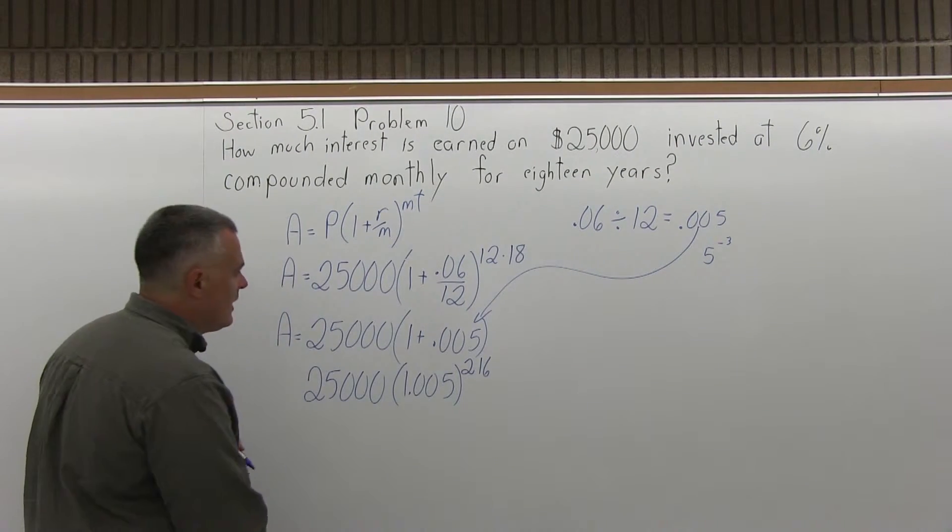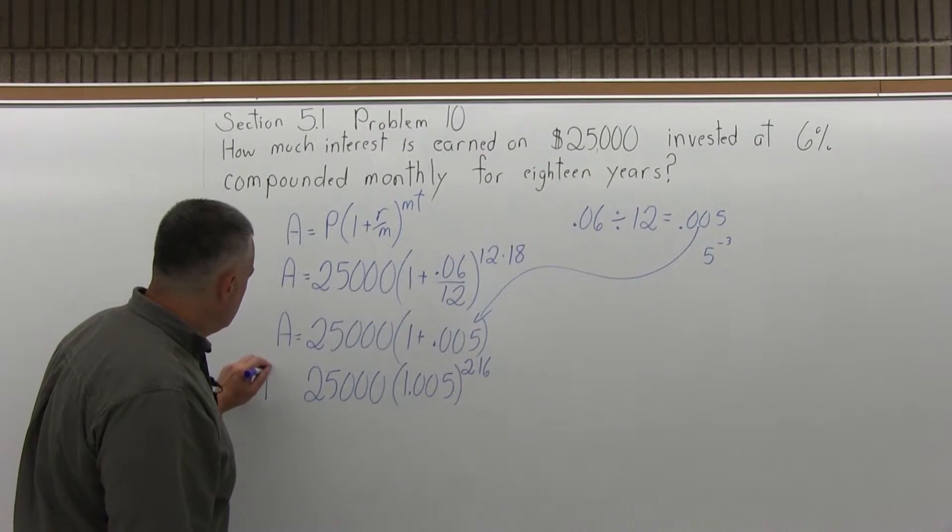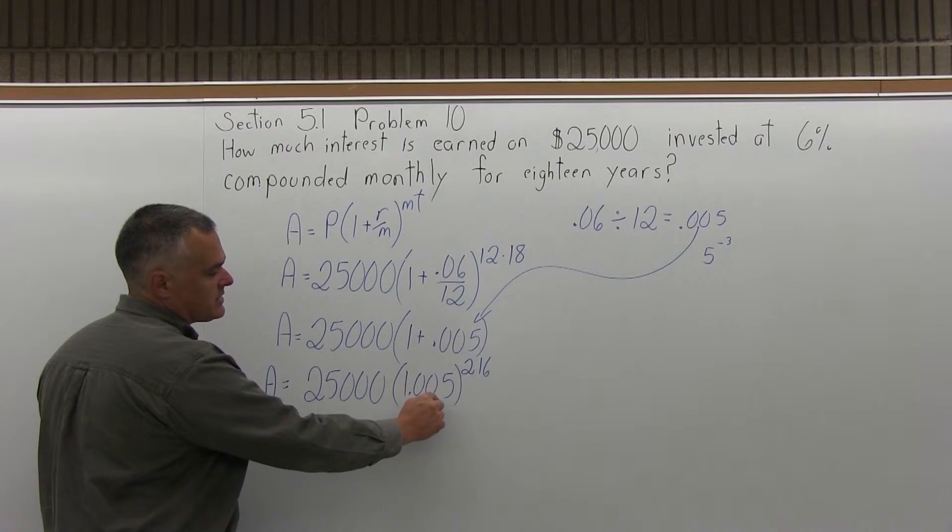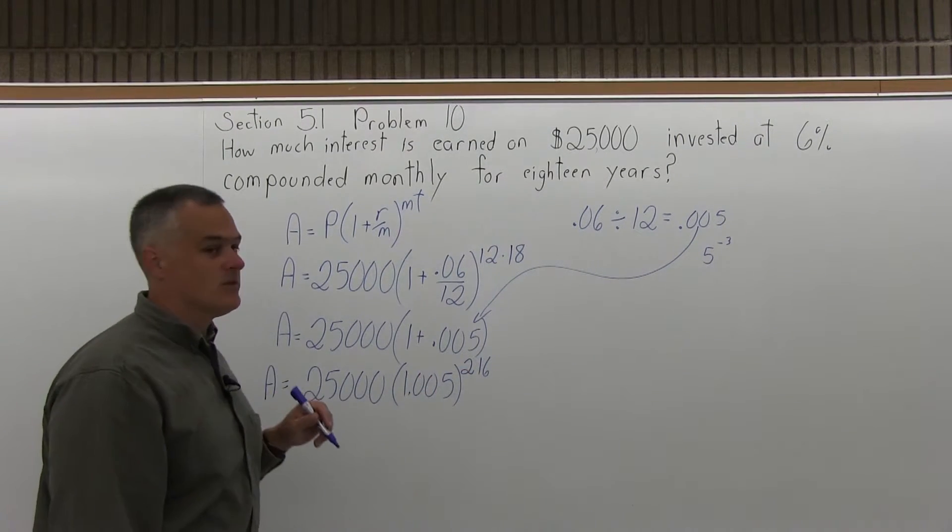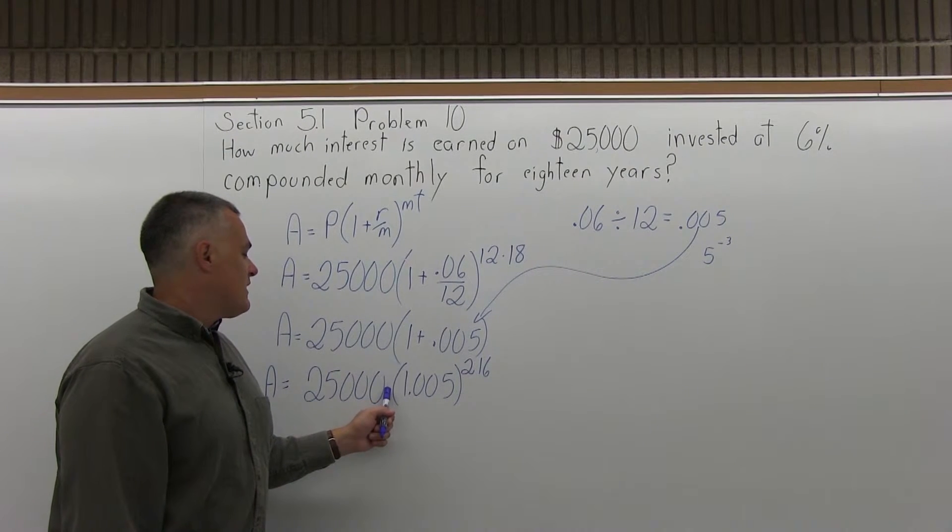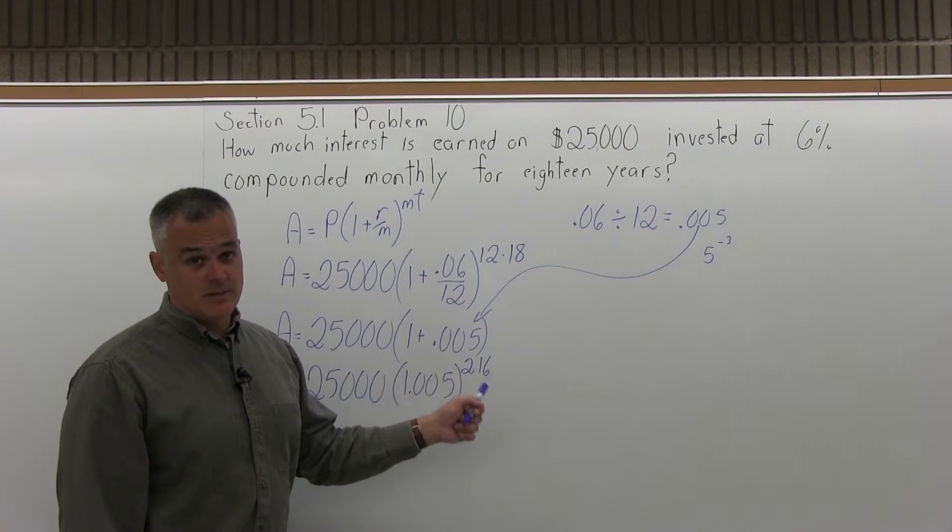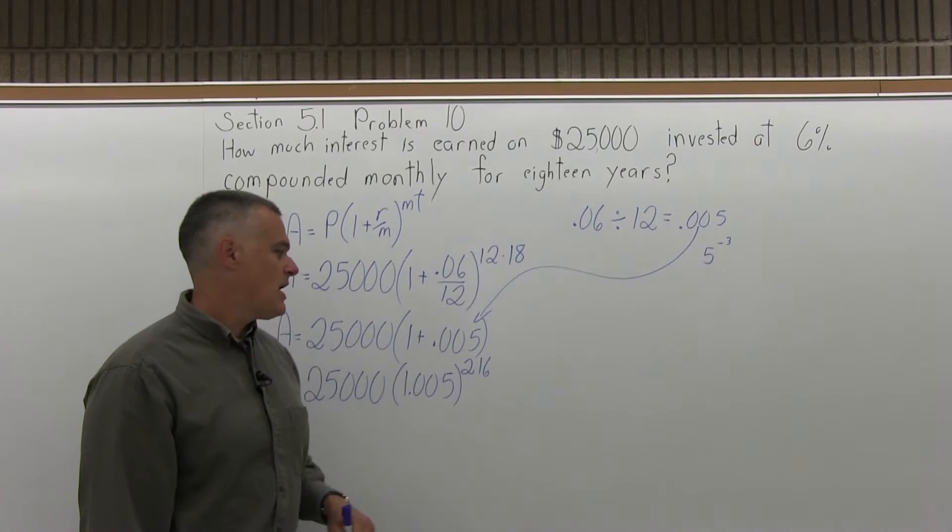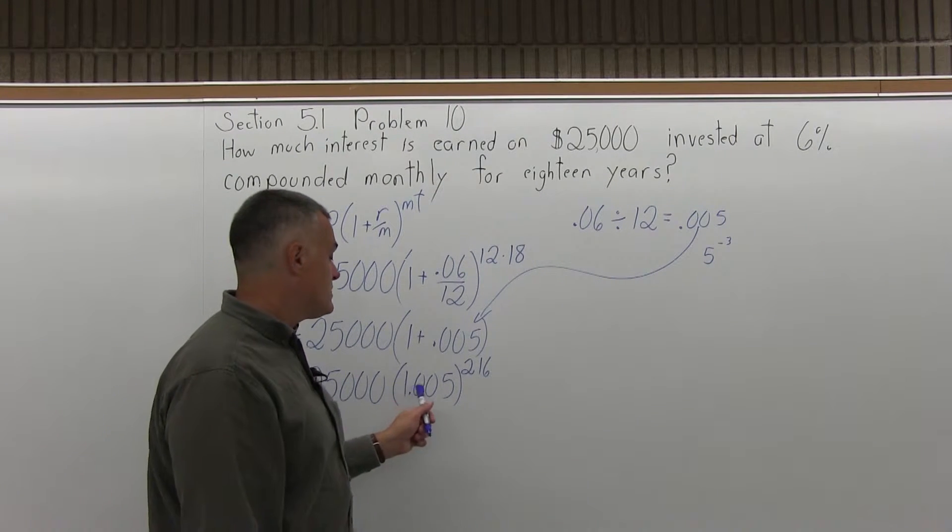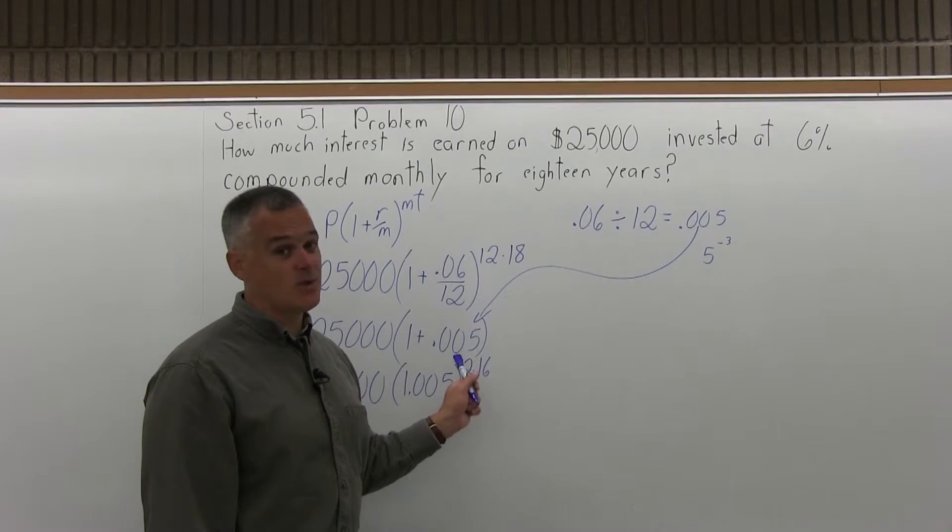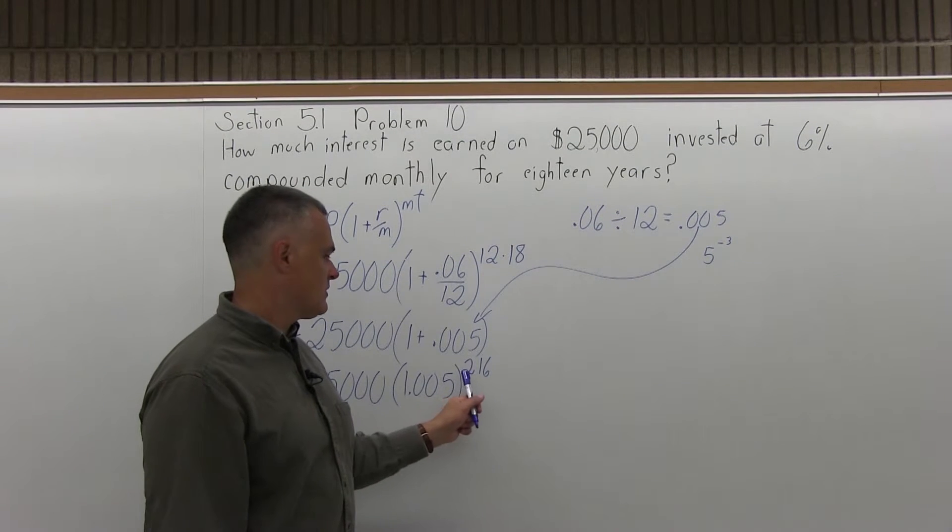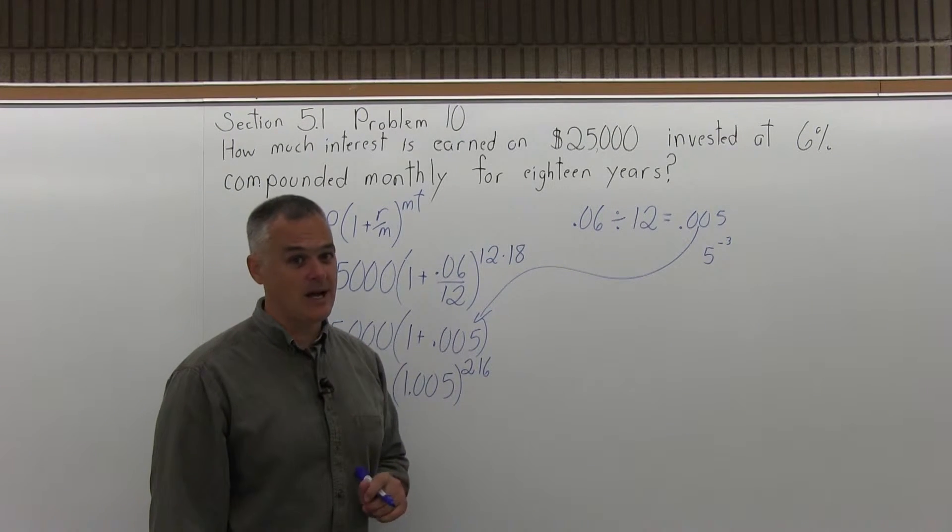So now what I have is A equals 25,000 times parentheses of 1.005 raised to the exponent of 216. Before I can multiply the 25,000 times the parentheses, I have to raise the parentheses to the 216th power, which you definitely don't want to do without a calculator. And it's not 1.005 times 216, it's 1.005 times 1.005 times 1.005, et cetera, 216 times.